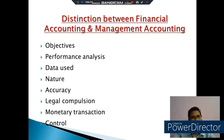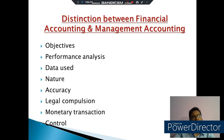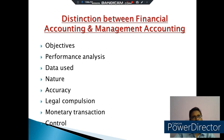We discuss about nature. Financial accounting is based on measurement, while management accounting is based on judgment. Financial accounting is objective, but management accounting is subjective in nature. Then we discuss about accuracy. Accuracy is a very important factor of financial accounting. But in management accounting, approximate information is used for internal use.